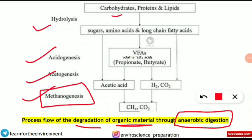Organic materials — carbohydrates, proteins, and lipids — undergo hydrolysis, which is the breakage of bonds using water. This yields sugars, amino acids, and long-chain fatty acids. These are the products of the first step of anaerobic digestion.